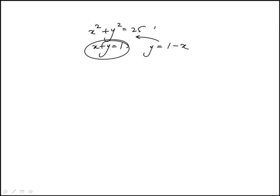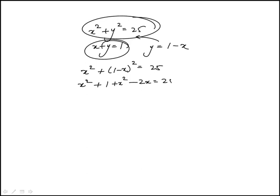So I'll take y and replace that in this equation. This becomes equal to 25, then just do the expansion. x squared plus 1 minus 2x plus x squared is 25. This becomes 2x squared minus 2x plus 1 is 25.